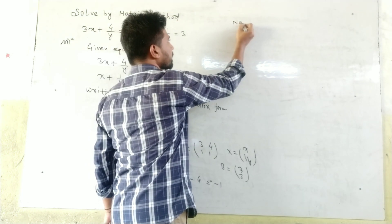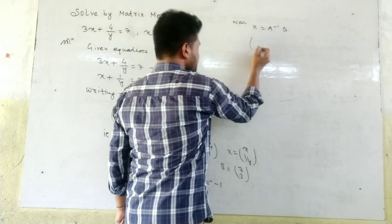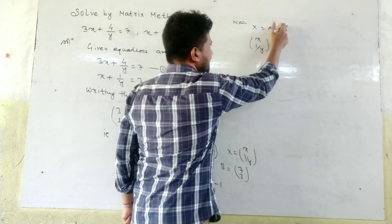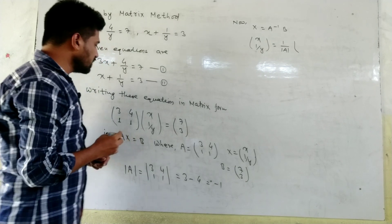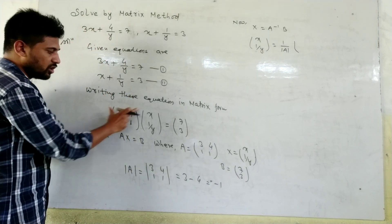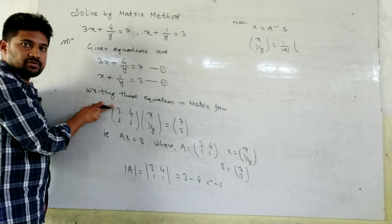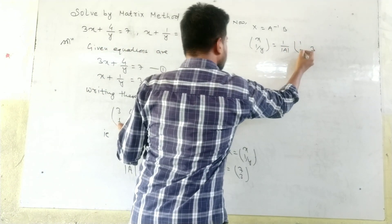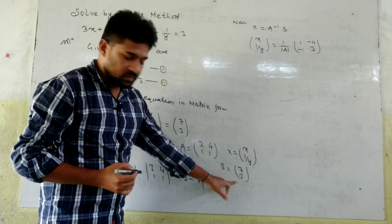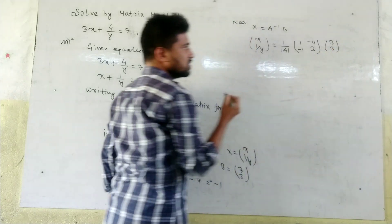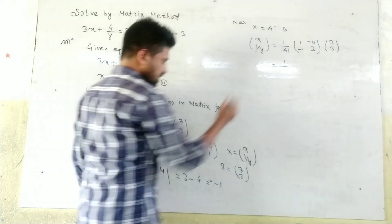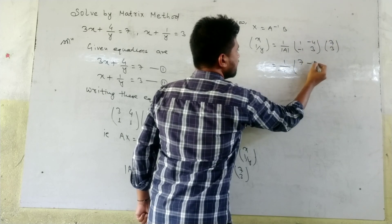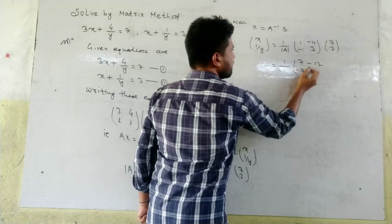We know that X = A⁻¹·B. So [x; 1/y] = A⁻¹·B. A inverse equals 1 over determinant A multiplied by the adjugate. We interchange the main diagonal elements — 3 becomes 1 and 1 becomes 3 — and multiply the off-diagonal elements by minus. So A⁻¹ = (1/−1)·[1, −4; −1, 3]. Multiplying with B = [7; 3]: 1×7 minus 4×3 = 7 minus 12 = minus 5, and minus 1×7 plus 3×3 = minus 7 plus 9 = 2.